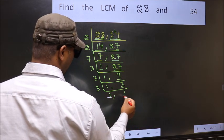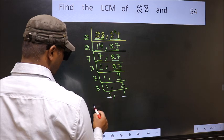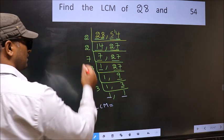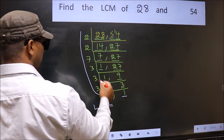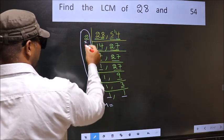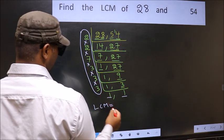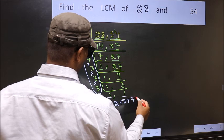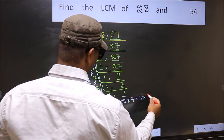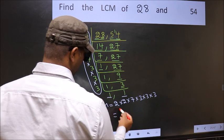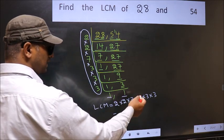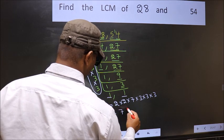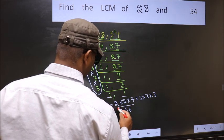We got 1 in both places, so our LCM is the product of these numbers. That is 2 times 2 times 7 times 3 times 3 times 3 times 3. When we multiply these numbers, we get 756 as our LCM.